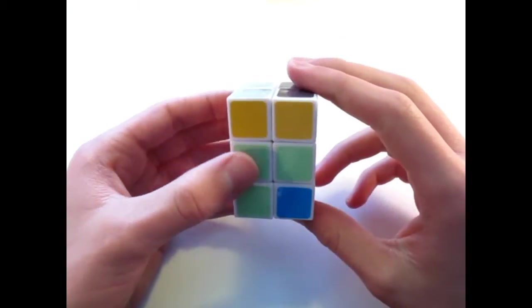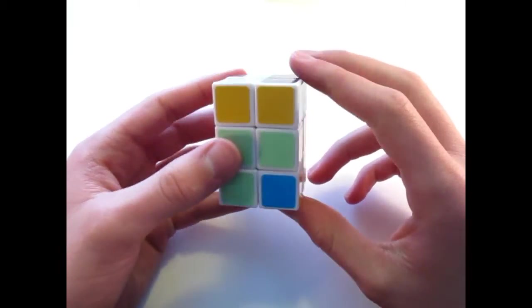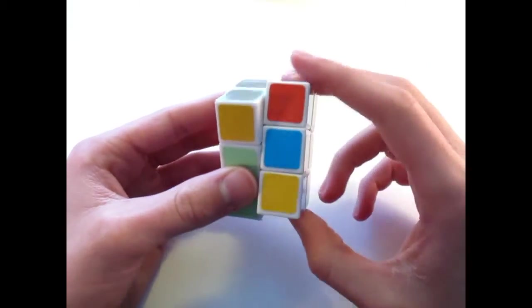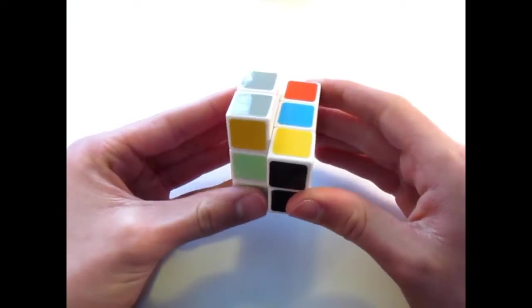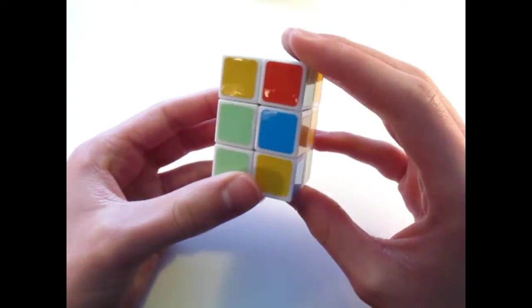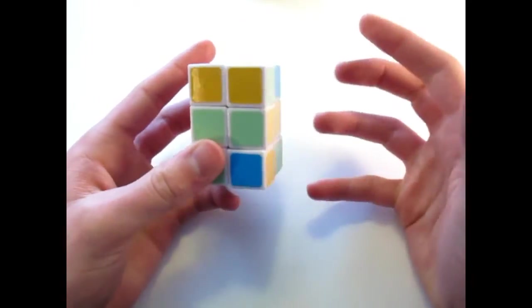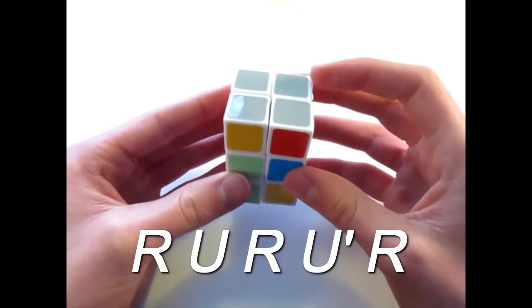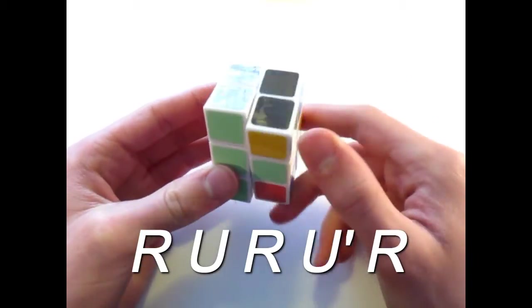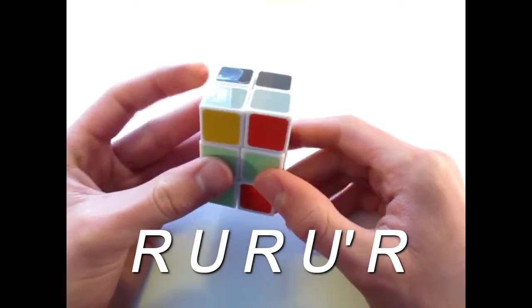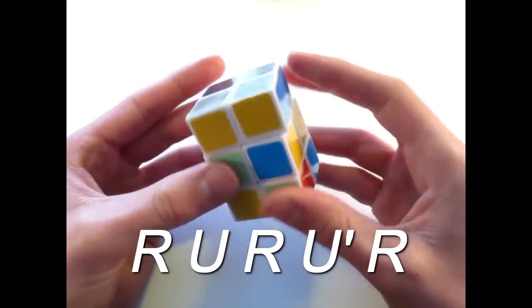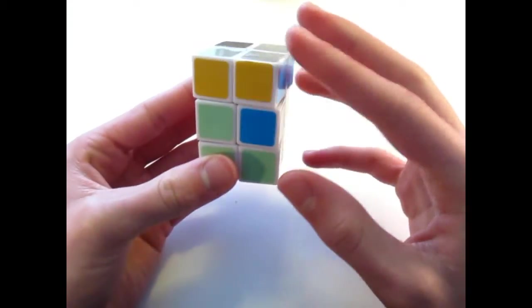So in this algorithm when I say an r turn or an f turn that has to be a 180 degree turn. Because if I were to turn it only 90 degrees it would not be able to turn because this is not a shape shifting puzzle. So let's go ahead and learn the algorithm. The algorithm is r u r u prime r. And you see I just traded these two corner pieces for each other.